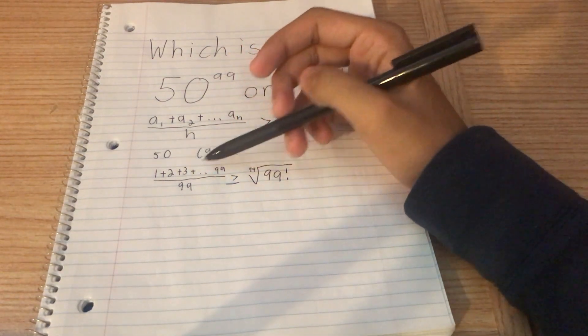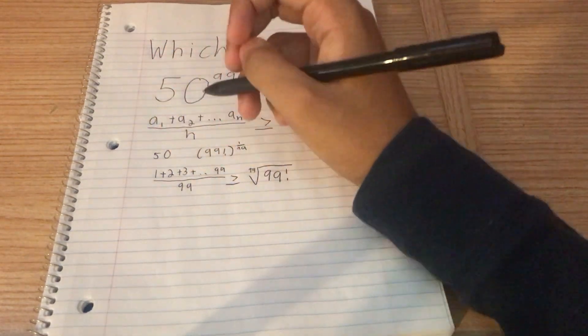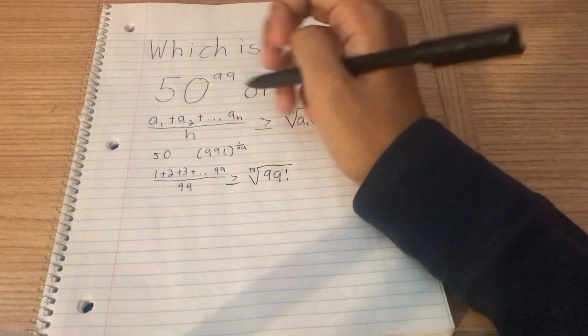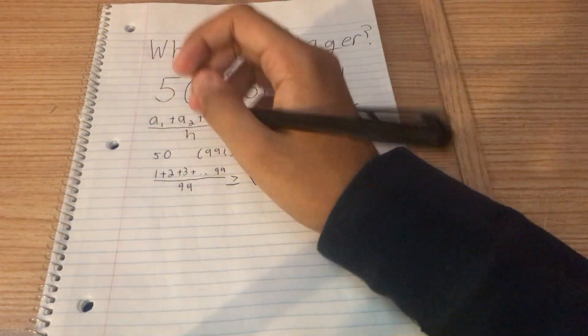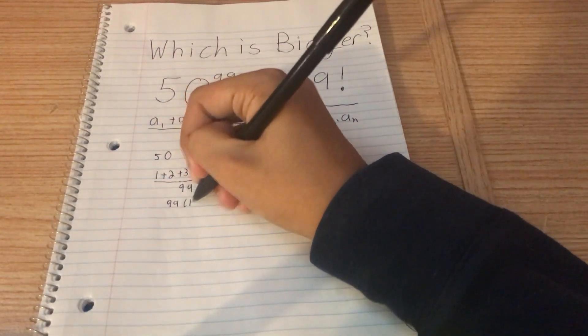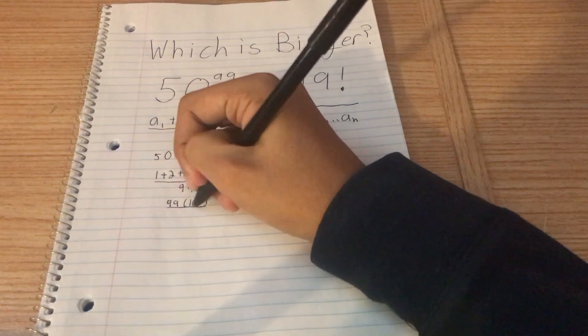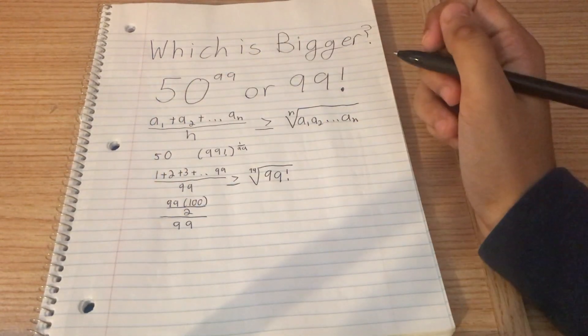We got this sum of natural numbers up to 99. We can use that well-known formula that the sum of 1 through n, all the natural numbers from 1 to n, is 99 times 99 plus 1 divided by 2. So you have 99 times 99 plus 1, 100, divided by 2. And all of that is still divided by 99, like that.